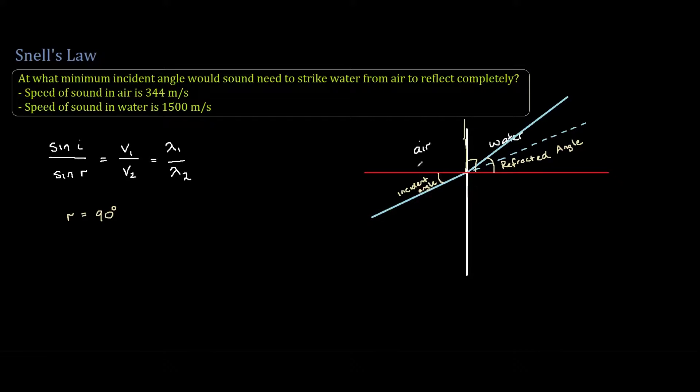So since the sound is coming from the air, V1 is the speed of sound in the air, which is 344. And since the sound hits the water after coming from the air, V2 is the speed of sound in the water, so 1500 meters per second.